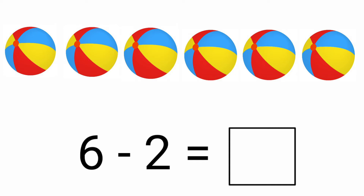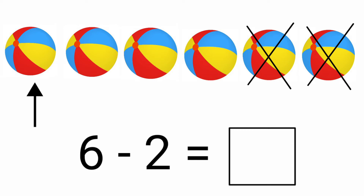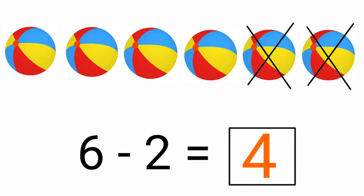There are 6 balls. We need to subtract 2 balls, from right to left. Let's subtract only 2 balls: 1, 2. How many balls are left? 1, 2, 3, 4. Yes, 4 balls are left. So the answer is 4. Let's write it in the given box: 6 minus 2 equals 4.